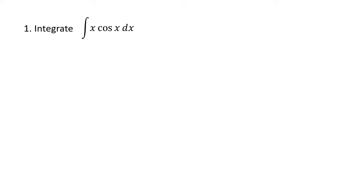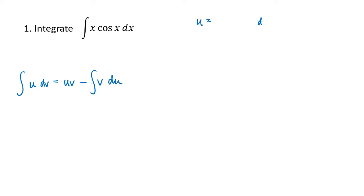We have two functions multiplied together, and so what we want to do is use the fact that the integration by parts formula tells us that the integral of u dv equals uv minus the integral of v du. All we have to do is identify which function should be our u and which function should be our dv.